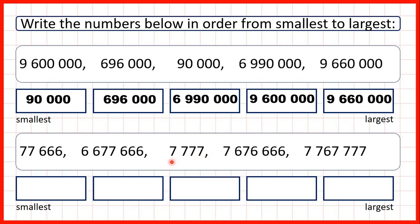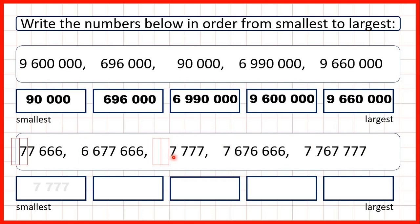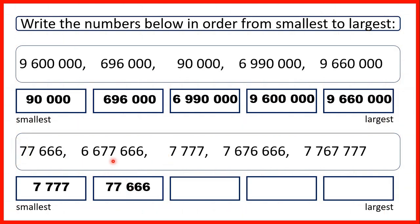Again, we know that numbers with fewer digits will be smaller. So that means this number here, which only has 4 digits, is our smallest number, and then this number here, which only has 5 digits, is next smallest. So now we need to compare our 7-digit numbers. Here we have 6 in the millions, but both of our other numbers have 7 in the millions. So that means this number here is next smallest.